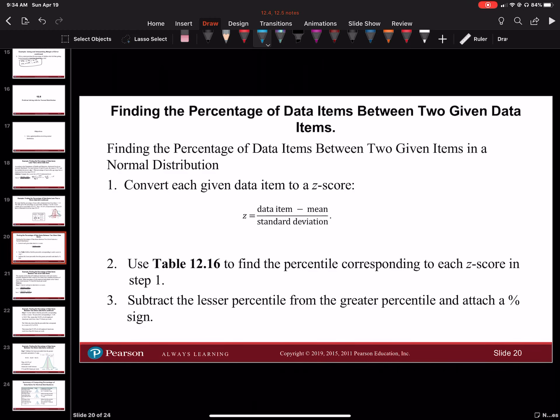Finding the percentage of data items between two given data items in a normal distribution. Convert each given data item to a z-score.